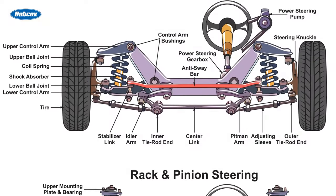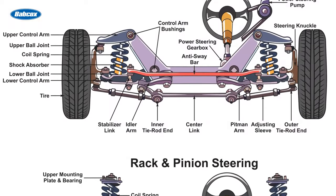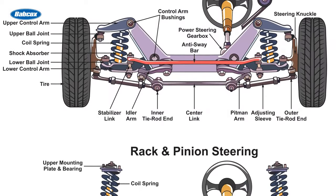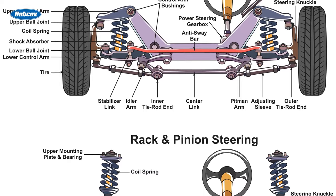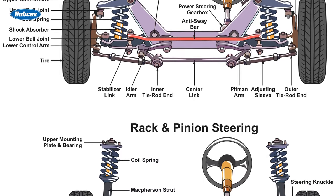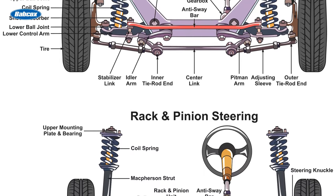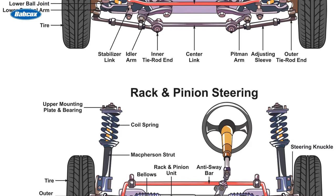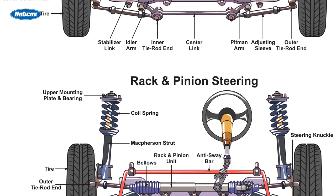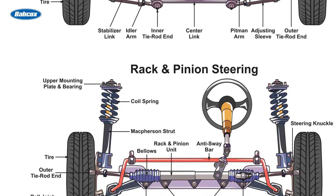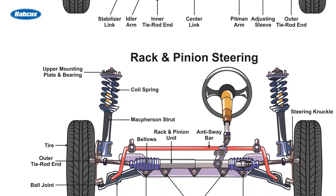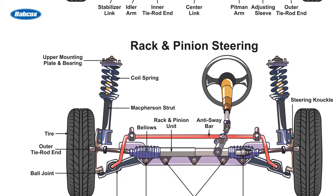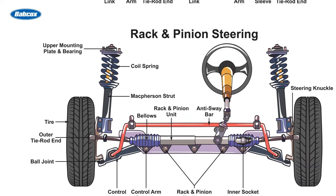The sway bar connects one side of the suspension to the other, and they can be located in the front, rear, or both. They are mounted in bushings to the frame or body of the vehicle and connected to the suspension at each end with either bushings or links.